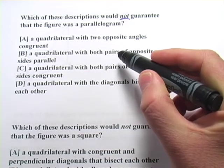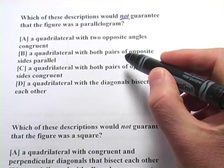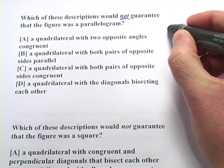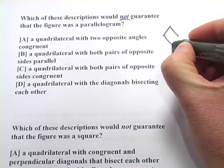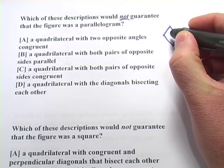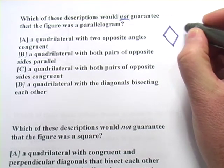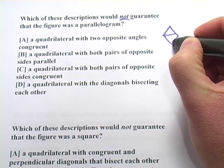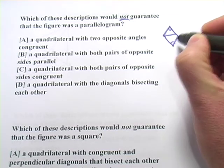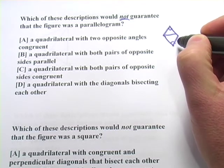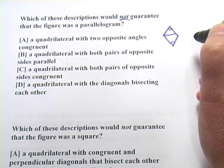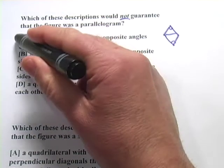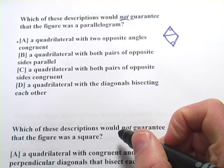A says, a quadrilateral with two opposite angles that are congruent. Hmm. So, let me try a kite again. So, if I've got a kite like this, and I would have opposite angles that might be congruent. So, maybe this angle would be the same as this angle, or vice versa, that angle, that angle. But that wouldn't be a parallelogram. So, I'm pretty sure this is our answer. This does not guarantee that it's a parallelogram.